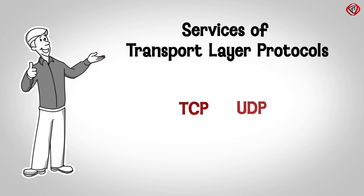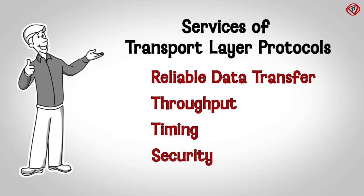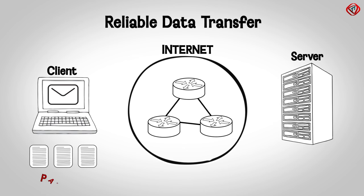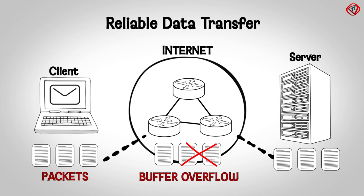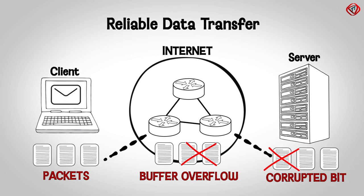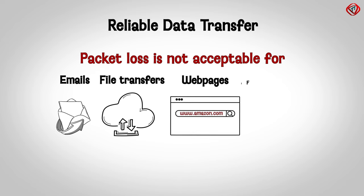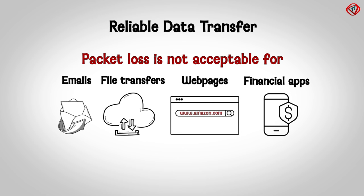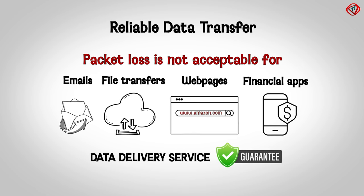The services which transport layer protocols can offer include reliable data transfer, throughput, timing, and security. Regarding reliable data transfer: before transmitting a message, it is divided into small units called packets. Packets may get lost due to buffer overflow in a router, or routers can discard packets after some bits get corrupted. Such packet loss is not acceptable for emails, file transfers, web page transfers, or financial applications, as data loss in such cases can have devastating consequences. Therefore, a transport layer protocol should provide guaranteed data delivery service, known as reliable data transfer.